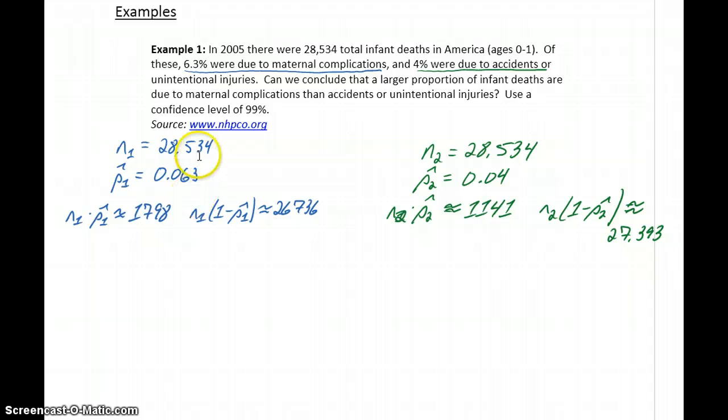So we've identified our two sample sizes and our number of successes in each case, the 1,798 and the 1,141, and we want to use a confidence level of 99%.